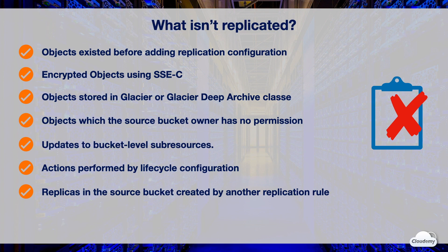After S3 replicates an object, that object cannot be replicated again. For instance, if you change the destination bucket in an existing replication configuration, S3 won't replicate the object again. Similarly, if you've enabled a destination bucket as a new source bucket, replicas in that bucket that were previously replicated from another bucket won't be replicated again.